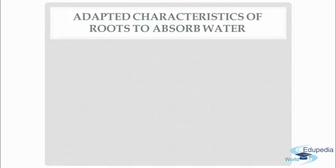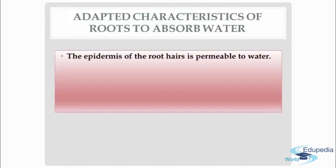First of all, I will tell you about some adapted characteristics of root to transport water. The epidermis of root hairs is permeable to water. The thin cellulosic cell wall present in the root hairs — remember the structure that I have discussed about the root hair in my previous video lecture? If you don't remember that structure, please go through my previous video lecture. The thin cellulosic wall that is present in the root hair is permeable to water. Thus, the soil solution flows in and out of the cells in this region.